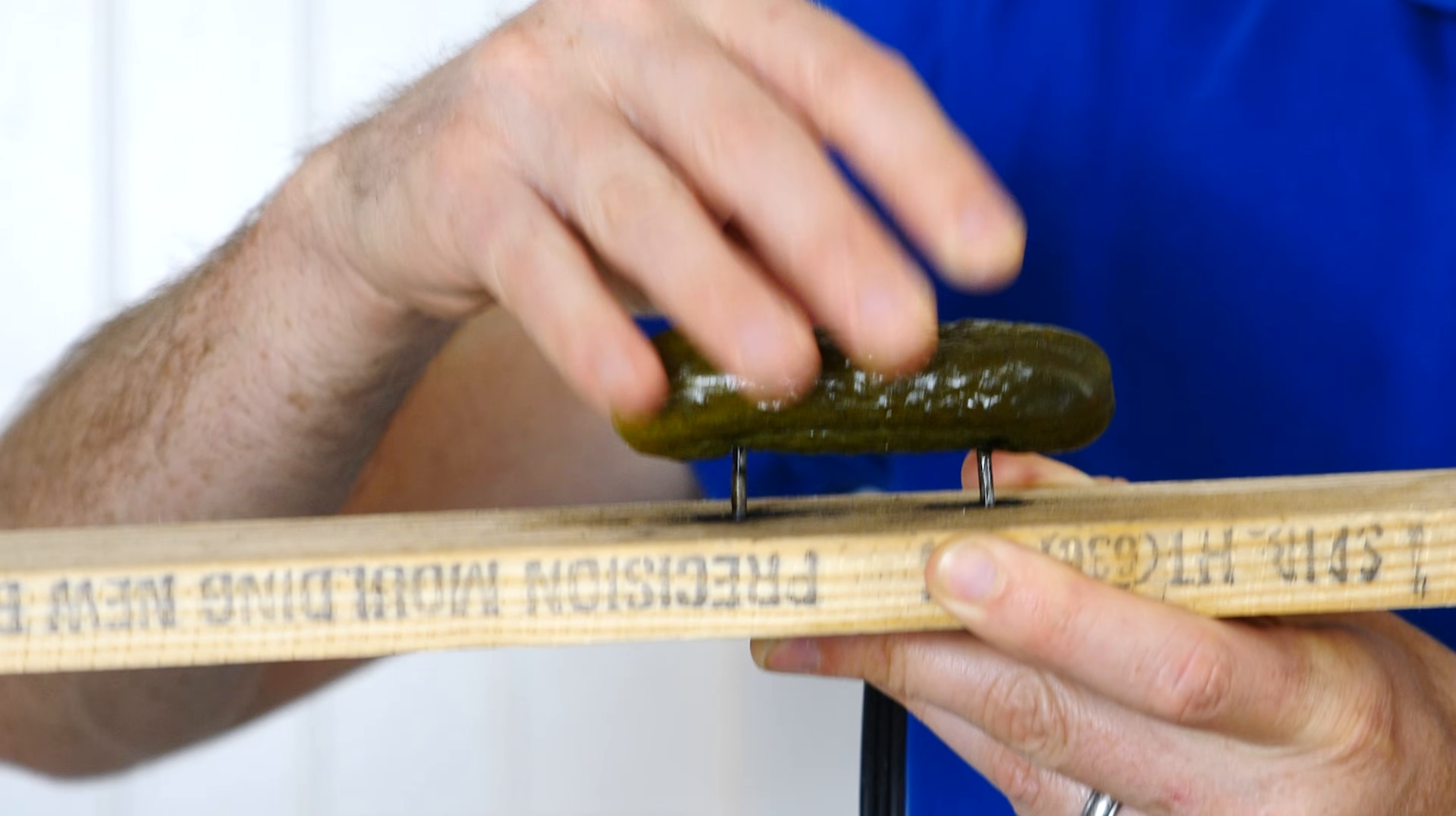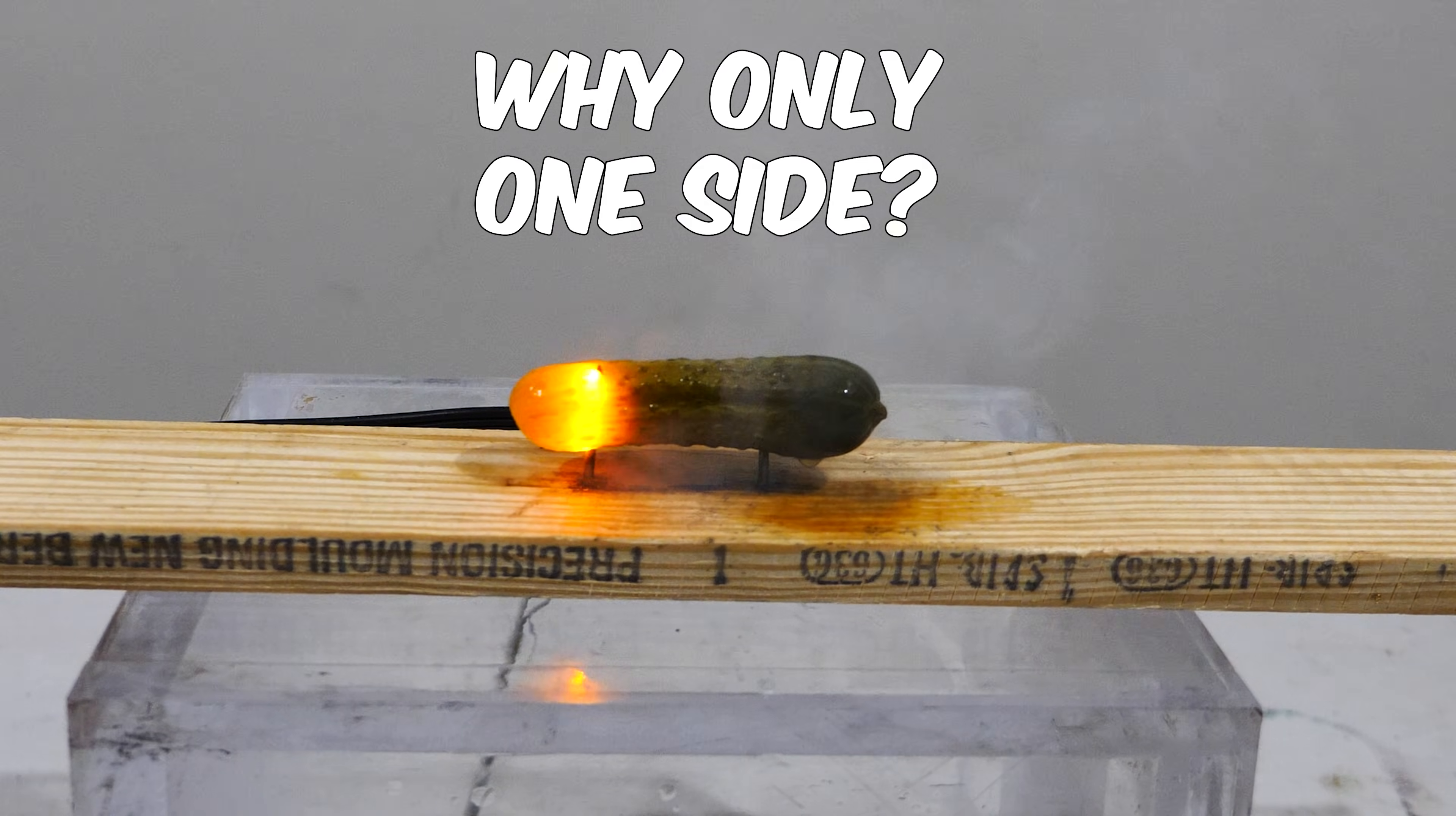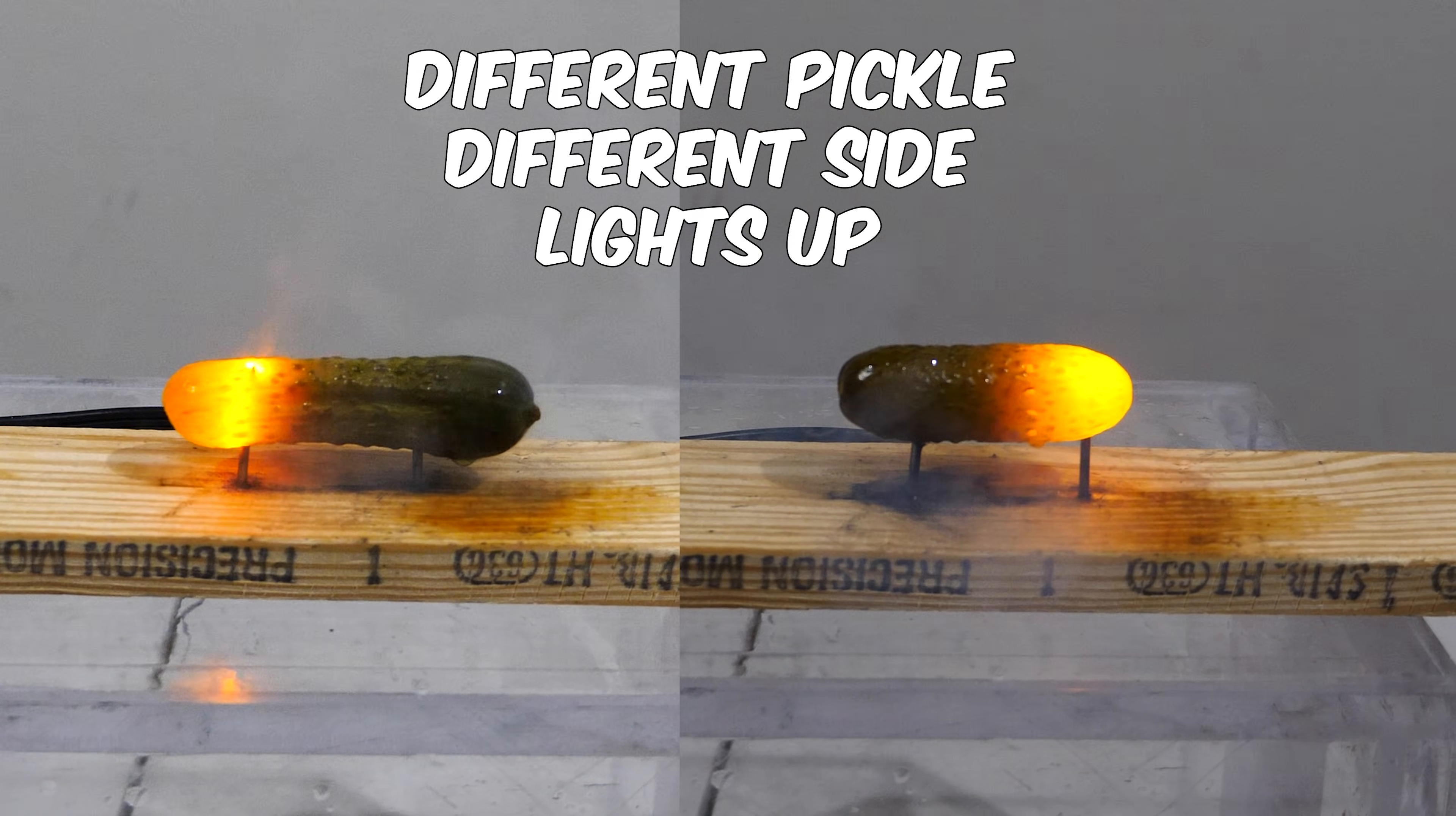Hey everyone, I have a problem. Whenever I try to plug in a pickle, it sparks and lights up. The problem is the pickle preferentially lights up on one side and gets hotter on one side than the other. And sometimes, depending on the pickle, it even randomly switches.